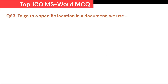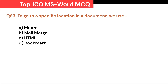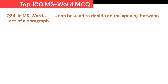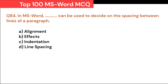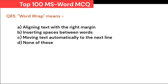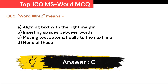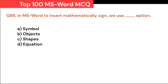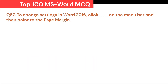To go to a specific location in a document, we use: A. Macro. B. Mail Merge. C. HTML. D. Bookmark. Correct answer is D. Bookmark. In MS Word, Dash can be used to decide on the spacing between lines of a paragraph: A. Alignment. B. Effects. C. Indentation. D. Line spacing. Correct answer is D. Line spacing. Word wrap means: A. Aligning text with the right margin. B. Inserting spaces between words. C. Moving text automatically to the next line. D. None of these. Correct answer is C. Moving text automatically to the next line.